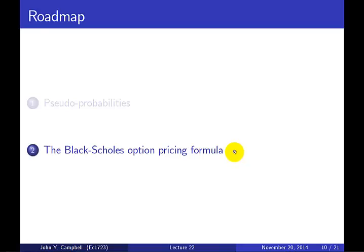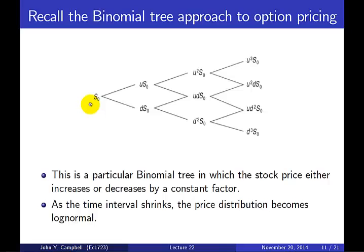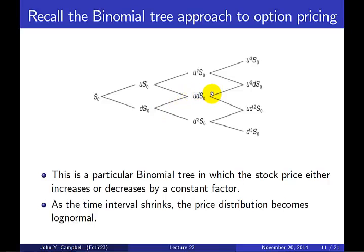Now we go on from the binomial model and take another step: the Black-Scholes option pricing formula. Recall the binomial tree approach, where a stock can go up or down. We now consider a much bigger recombining binomial tree: each up step multiplies by factor u, so two up steps give u-squared times S0, three up steps give u-cubed times S0, and similarly for down steps. In this recombining tree, the branches come back together — ud gives the same node regardless of order — so the number of nodes grows linearly rather than exponentially with the number of steps.